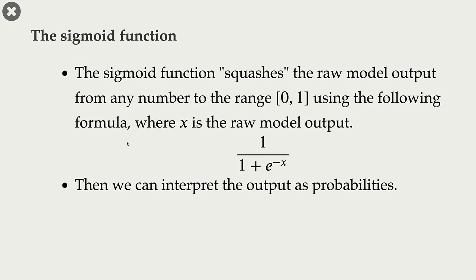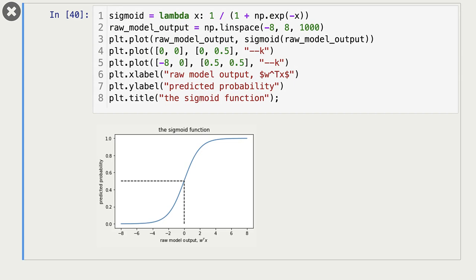What is the sigmoid function? The sigmoid function squashes the raw model output from any number to the range 0 to 1. It does this using the formula 1 over (1 + e to the minus x), where x is our raw model output. When we apply this formula, we get a number in the range 0 to 1, and we can interpret this output as probabilities.